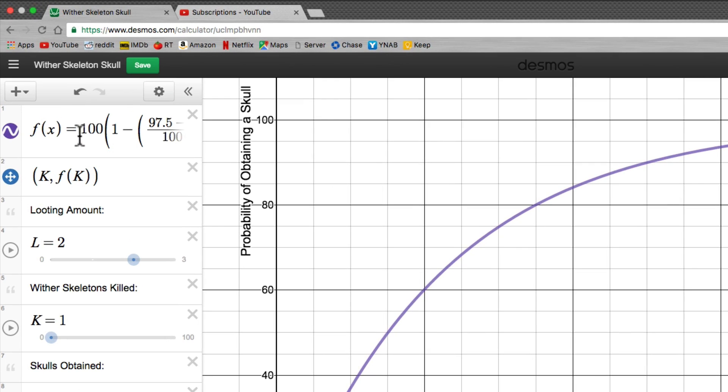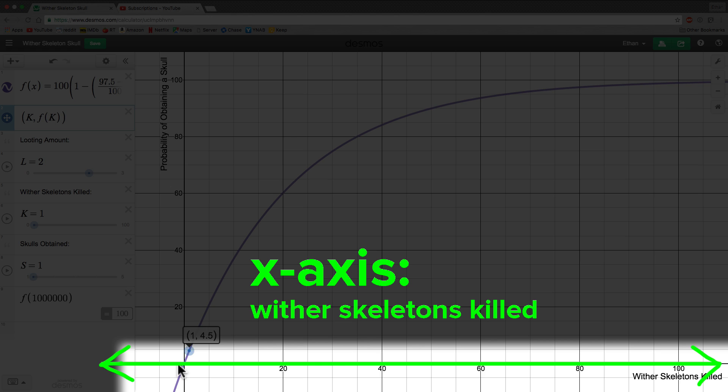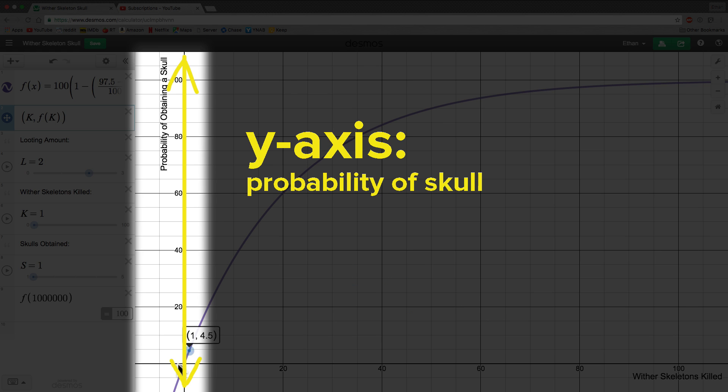I constructed this simple formula on Desmos.com's graphing calculator to answer this question. The x-axis here is how many Wither Skeletons you kill, and the resulting y-axis is the percent chance you will have a Wither Skeleton Skull by then.